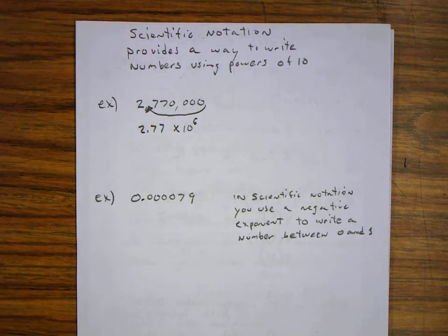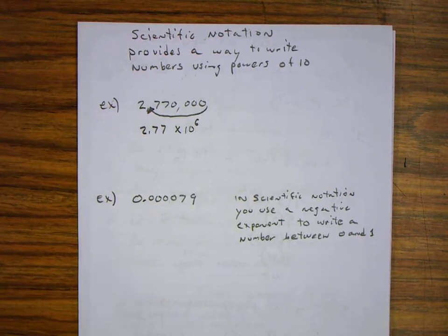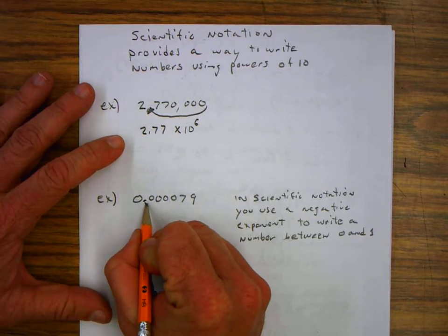In this case when we're writing scientific notation for a number that's between 0 and 1, as it is in this case, we move the decimal just like we did in the first place. We move the decimal to get the decimal greater than 1 but less than 10. So we're moving it to the right in this case.